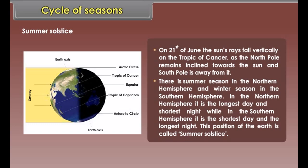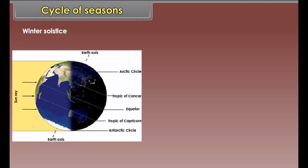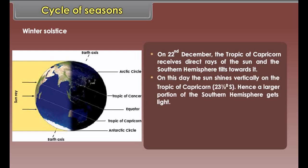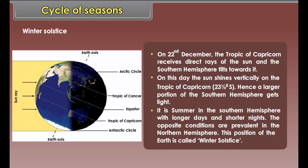Summer solstice. On 21st June, the sun's rays fall vertically on the Tropic of Cancer as the North Pole remains inclined towards the sun and the South Pole is away from it. There is summer season in the Northern Hemisphere and winter season in the Southern Hemisphere. In the Northern Hemisphere it is the longest day and shortest night, while in the Southern Hemisphere it is the shortest day and the longest night. This position of the earth is called summer solstice.